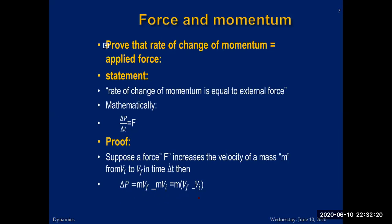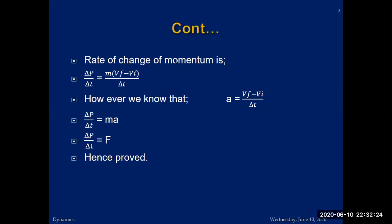The rate of change of momentum is this change in momentum divided by time Δt. This gives us m(vf − vi)/Δt. Now, (vf − vi)/Δt is the rate of change of velocity, which is acceleration — something we covered in our initial classes at the beginning of this chapter. Substituting, we get m times acceleration, i.e., ma.